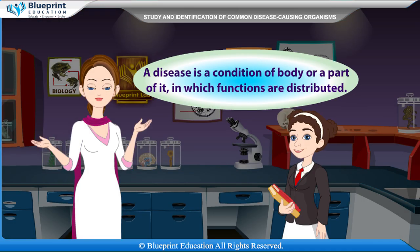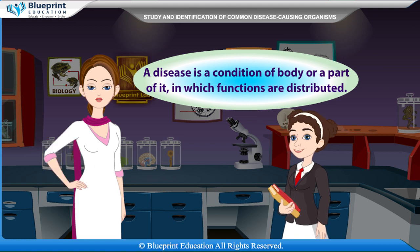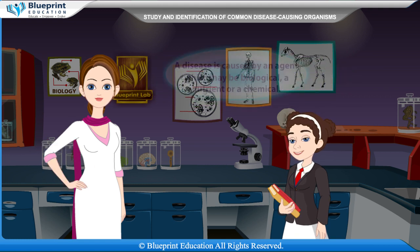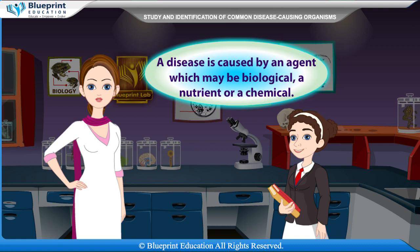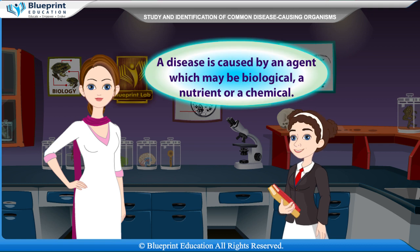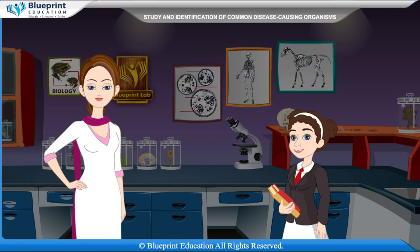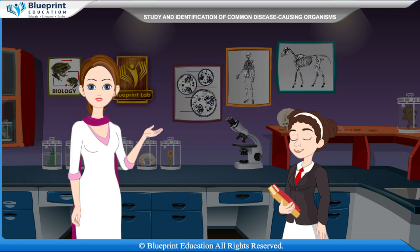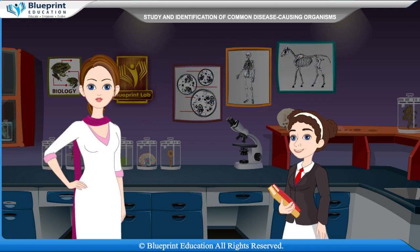A disease is a condition of the body or a part of it in which functions are disturbed. A disease is caused by an agent which may be biological, a nutrient, or a chemical. The biological agents causing disease are called pathogens.